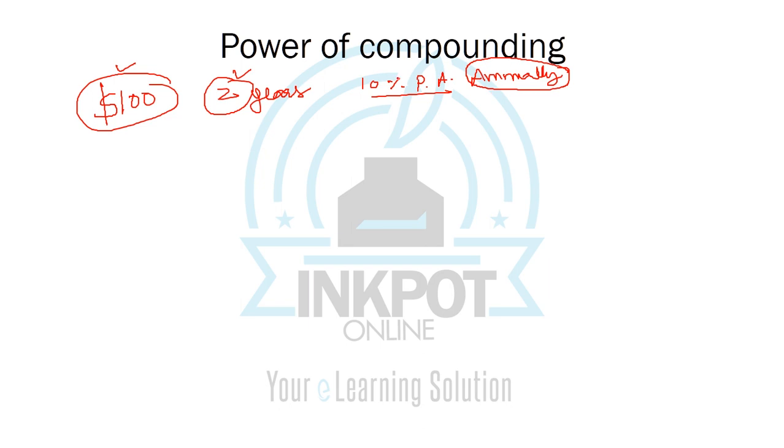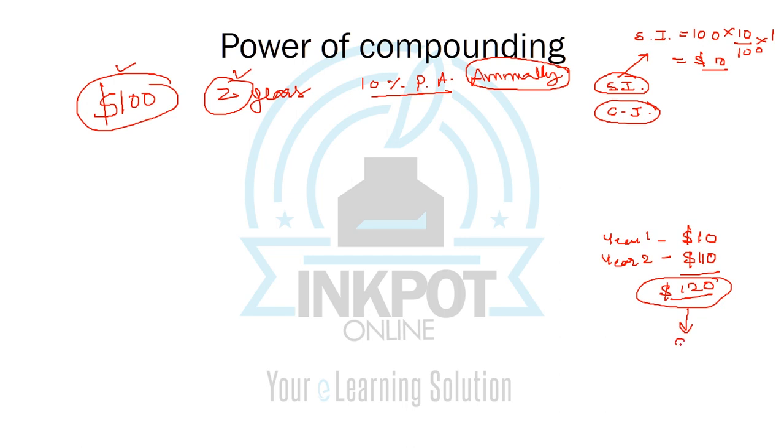There are two ways of looking at the same investment. You can get the interest by a simple interest method or by a compound interest method. In case of simple interest, you'll get the interest rate which is a fixed percentage of the principal amount every year. So this will be $10 in year one and $10 in year two.